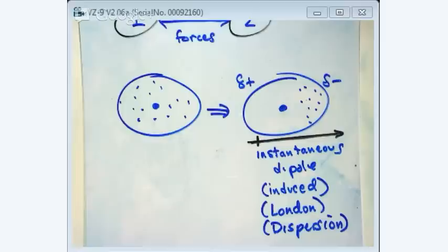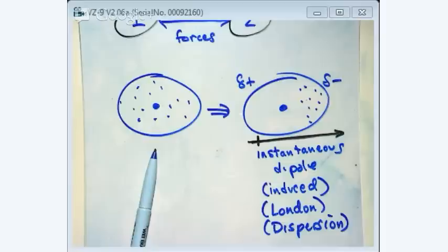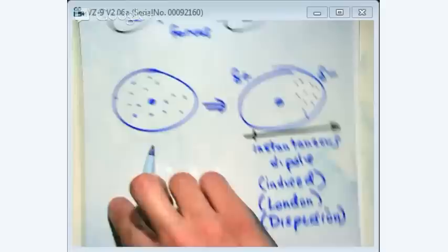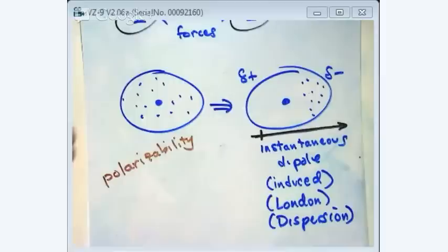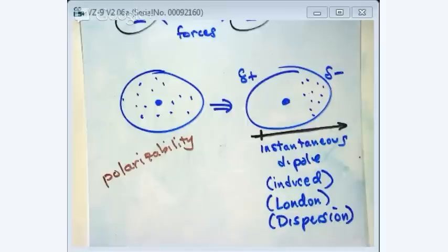The bigger the molecule or species, the more this can happen. We call that ability polarizability — the ability for an instantaneous dipole to form. The larger something is, the more polarizable it is. London forces grow as molecules increase in molar mass: larger molar mass means larger London forces. This is also called the dispersion force, and we're on pages 25–26 of the reader.